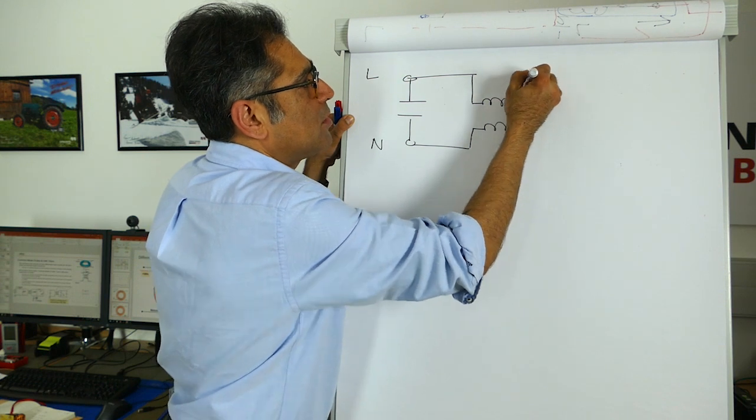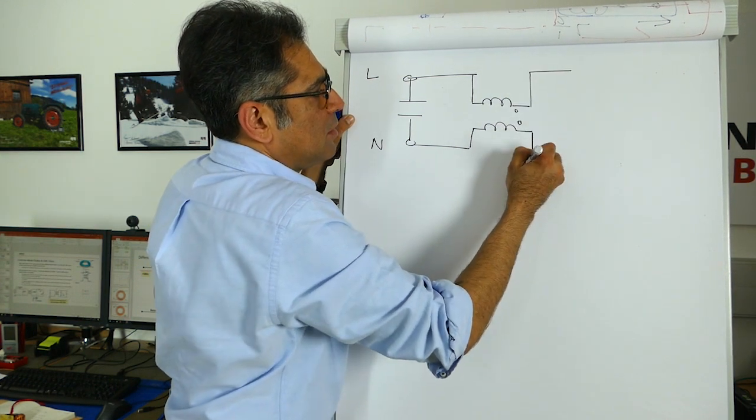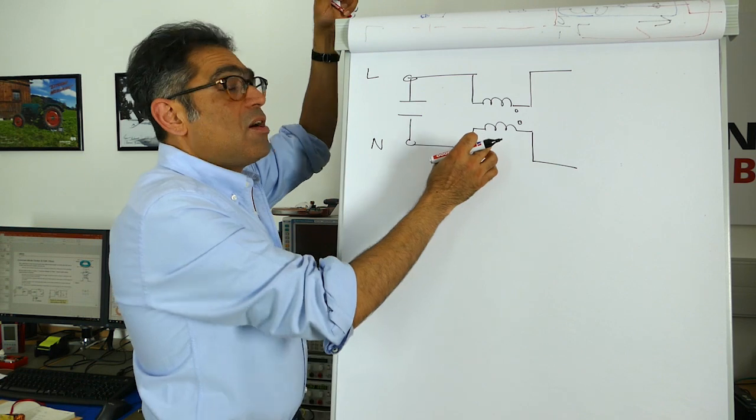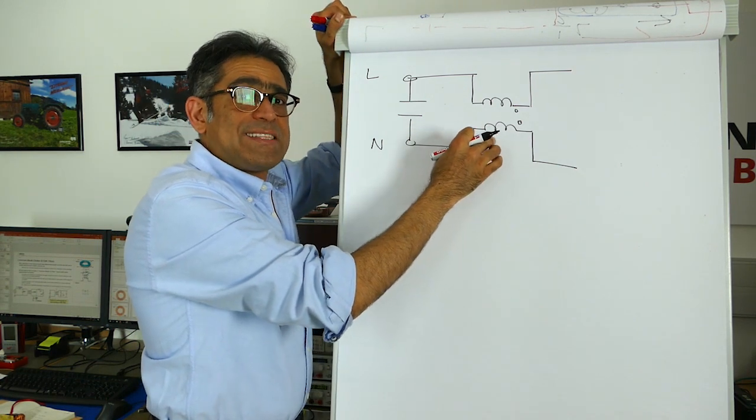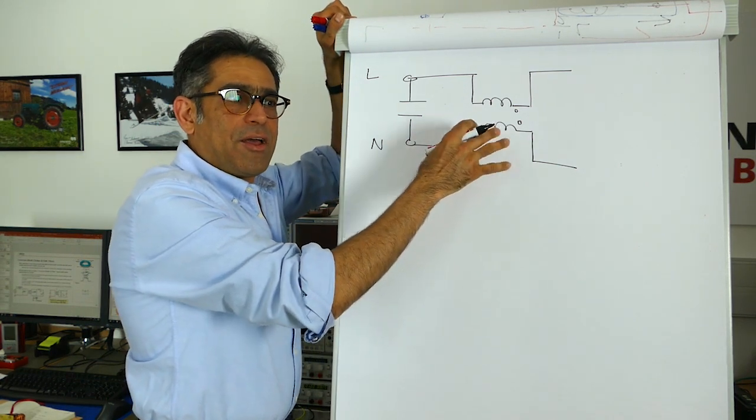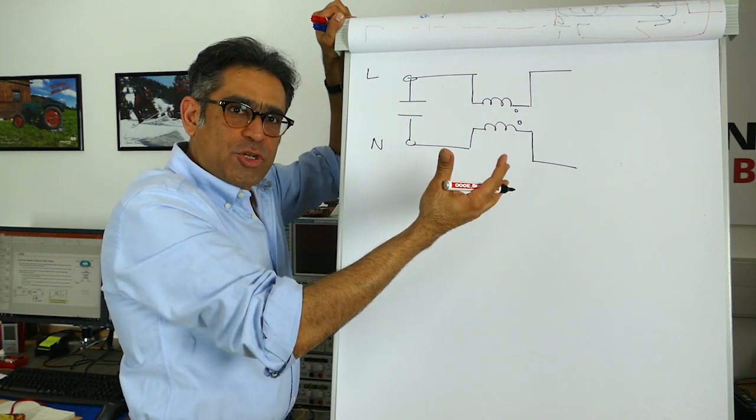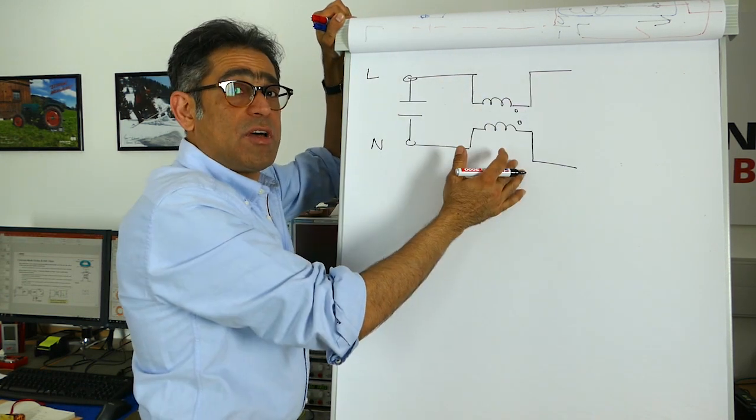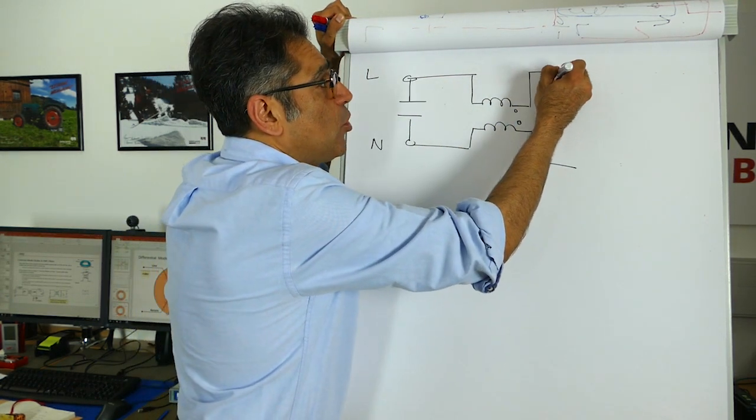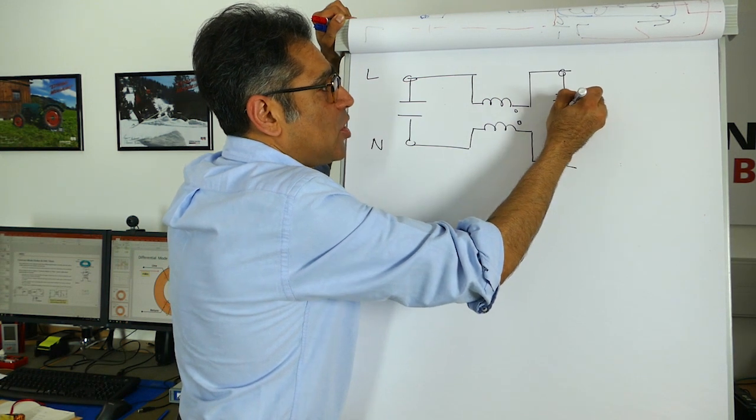then because the leakage of this is acting like the differential mode inductance they don't even show it on the circuit diagram. They draw the Y capacitors for the common mode choke like so in the center and tie to chassis. They do not show the inductors